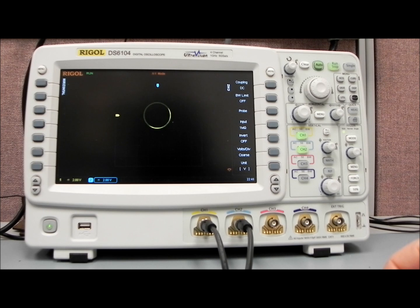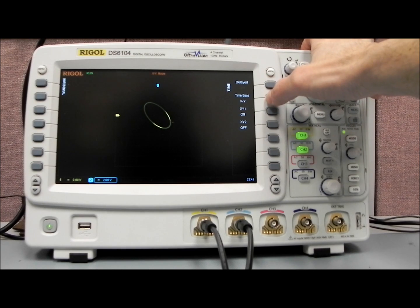If we did something like 125 degrees out of phase, you'll see that will turn into an ellipse. So that can be very useful when you want to see the phase differential between two incoming signals. Again, that's the X versus Y mode.